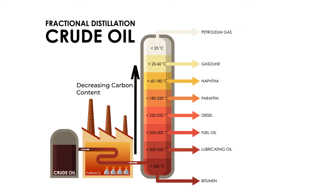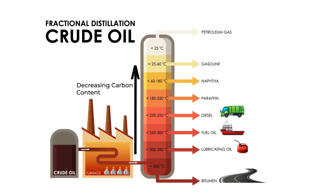Different fuels obtained after fractional distillation have different usages. For example, asphalt is used in road construction. Fuel oil is used in ships. Lubricating oil is used in engines of vehicles such as cars, bikes, buses, etc., to reduce friction. Diesel is used in engines which need high power such as trucks. Paraffin, which is a more refined version of kerosene, is used in aeroplanes.